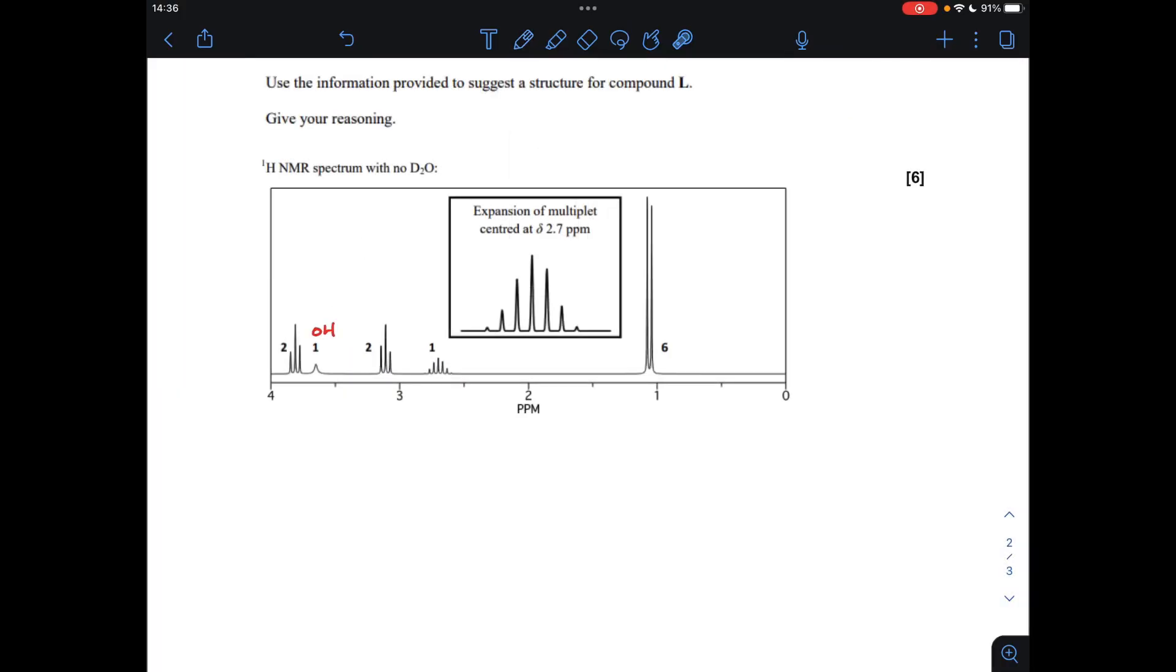I'm going to analyze the NMR spectrum in detail now. I'm going to take each signal in turn, the way I always do it. Notice we've got an expansion of this multiplet at delta 2.7 ppm. Take each one in turn, do my usual thing, and then we'll build up a picture of the structure as we go.